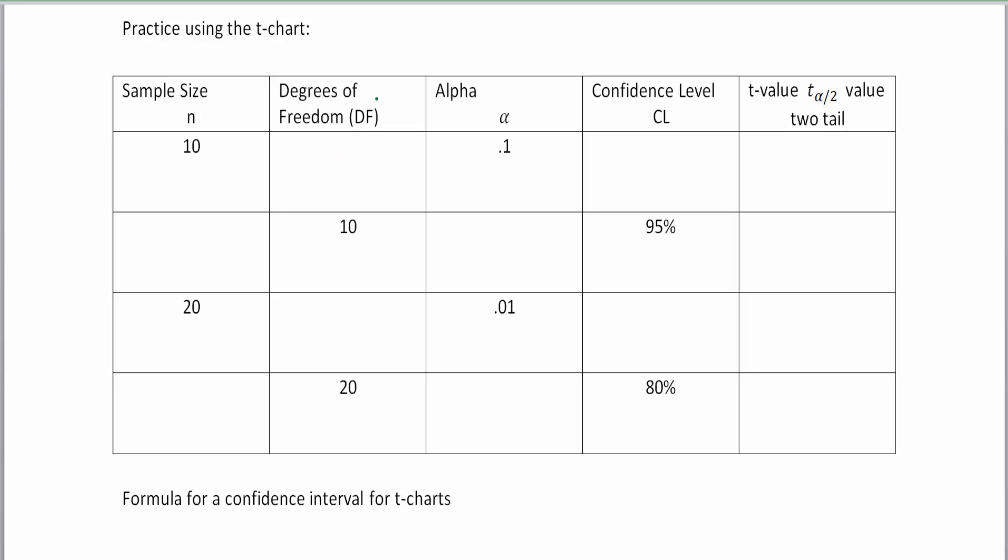Well, we learn the degrees of freedom is our sample size minus one, so that is going to be nine degrees of freedom. Now in terms of our alpha, if the alpha is our error, let's have a little reminder of what we were talking about in the previous video. If the alpha is the error, then the confidence level is going to be the percentage that is the complement of that error. So this error is like 10%, so the confidence level would be 90%.